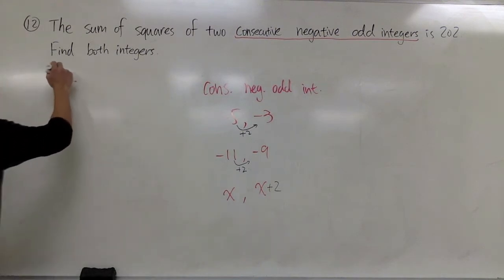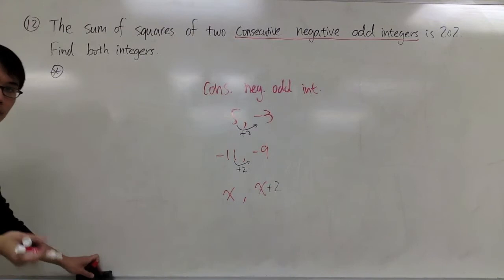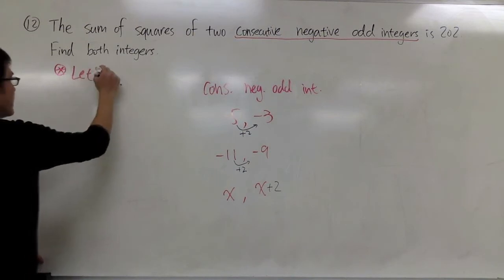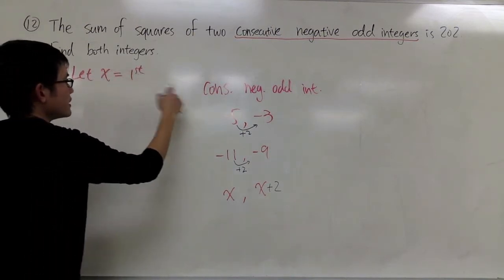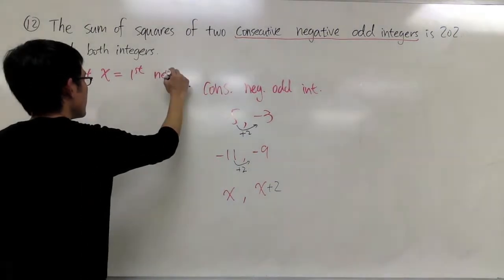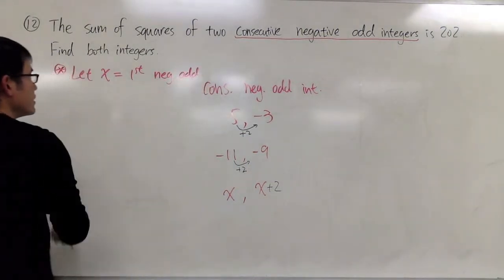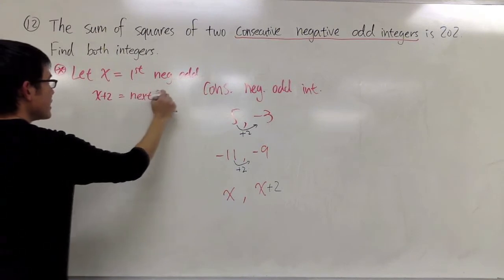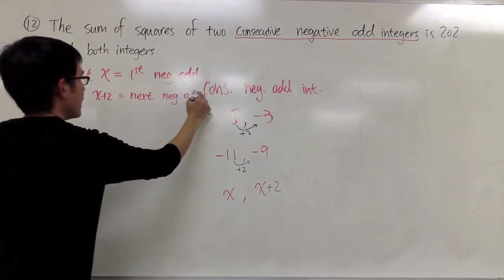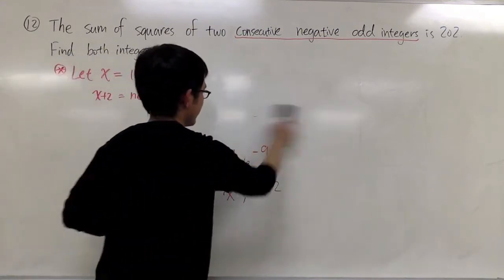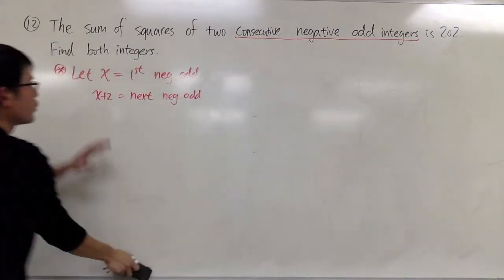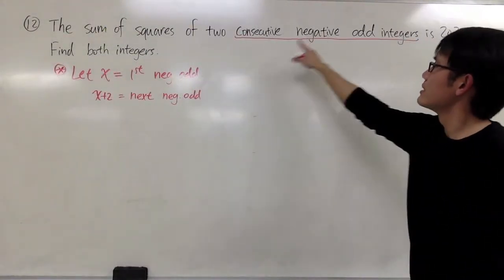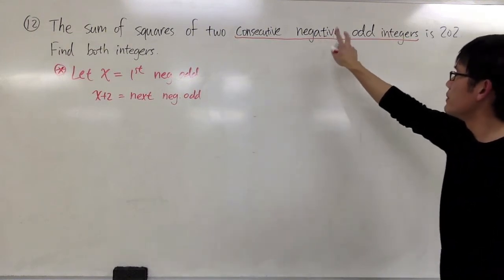So, perhaps I'll just write this down to make it more clear. I will say, let x be the first negative odd integer. And as we see over there, before I erase, x plus 2. x plus 2 will be the next negative odd integer. And now I can erase that. And hopefully, the example will show you why this is correct.